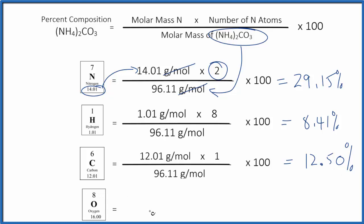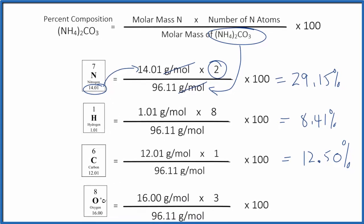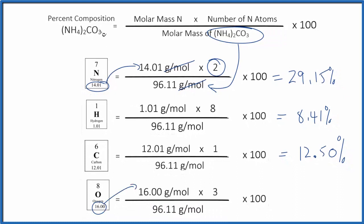Pause and calculate the percent composition by mass for the oxygen here in ammonium carbonate. So we have our oxygen right here, 3 oxygen atoms, and then we have the molar mass for ammonium carbonate. Multiply 16.00 times 3, and then once you get that number, divide by this 96.11. Multiply by 100, and you get 99.94%.